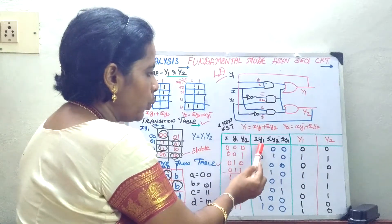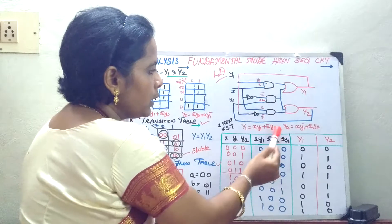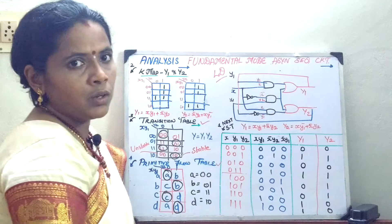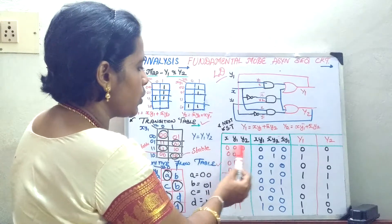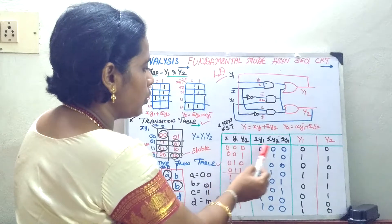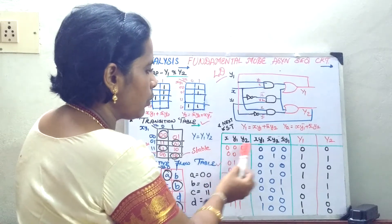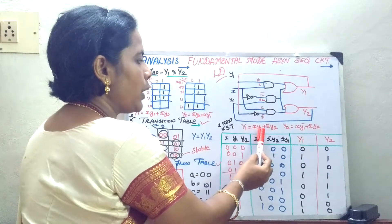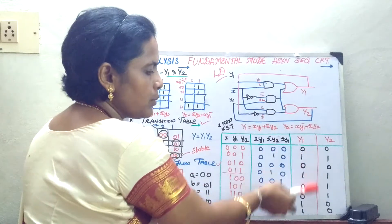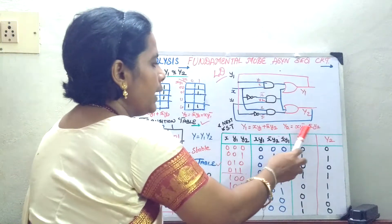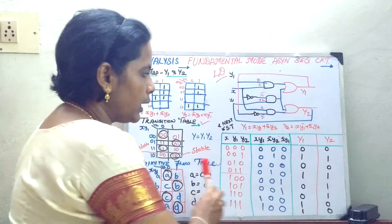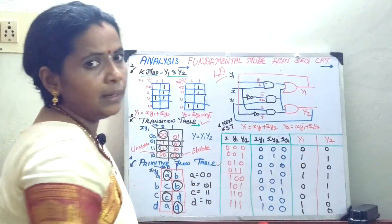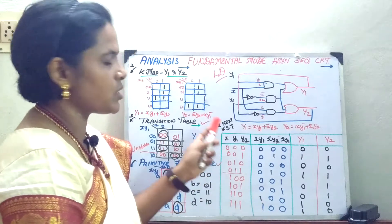The terms involved are: X into Y1, X bar into Y2 for Y1; and X into Y1 bar, X bar into Y2 for Y2. You can multiply each combination — for example, 0 into 0, then X bar means 1 into 0 is 0 — and fill the table accordingly. Y1 equals X into Y1 plus X bar into Y2, so add those two terms and fill the table. Fill similarly for Y2. With only the Boolean expressions, you fill the table, and the first step is complete.